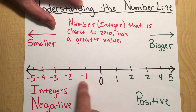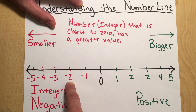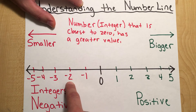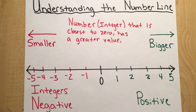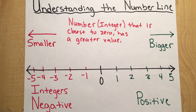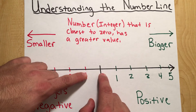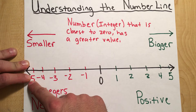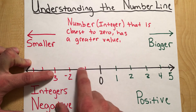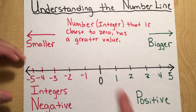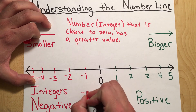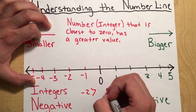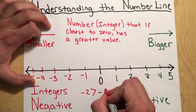Let me give you another example: comparing negative two and negative five. Which one is closest to zero? Negative two is only two units away from zero — one, two. Negative five is five units away from zero — one, two, three, four, five. So we can say that negative two is greater than negative five.